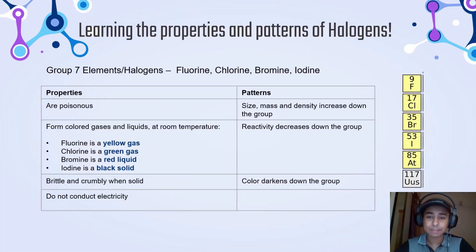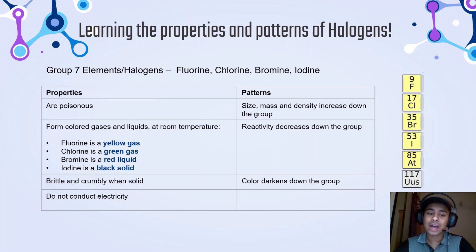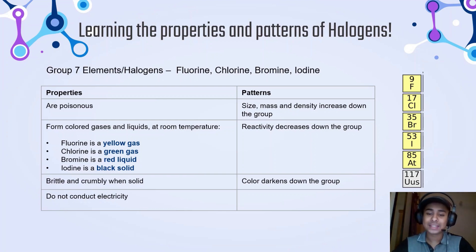Now let us move on to halogens. The halogens we are going to study are fluorine, chlorine, bromine, and iodine. These halogens are very poisonous. They form colored gases and liquids at room temperature: fluorine is a yellow gas, chlorine is a green gas, bromine is a red liquid, while iodine is a black crystalline solid, which is an exception. When these elements are solid, they are very brittle and crumbly. However, they do not conduct electricity or heat. Like all groups in the periodic table, halogens also have certain patterns: size, mass, and density increase down the group, reactivity decreases down the group, and the color of the elements darkens down the group.